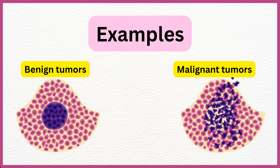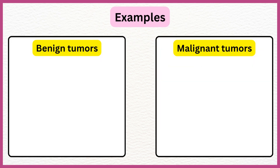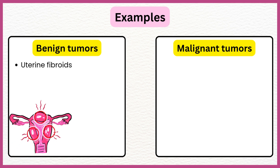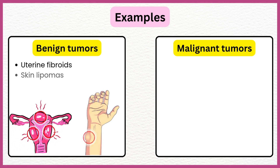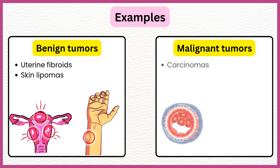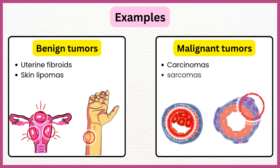Examples of both types: Benign tumors include uterine fibroids and skin lipomas, while malignant tumors include carcinomas and sarcomas.